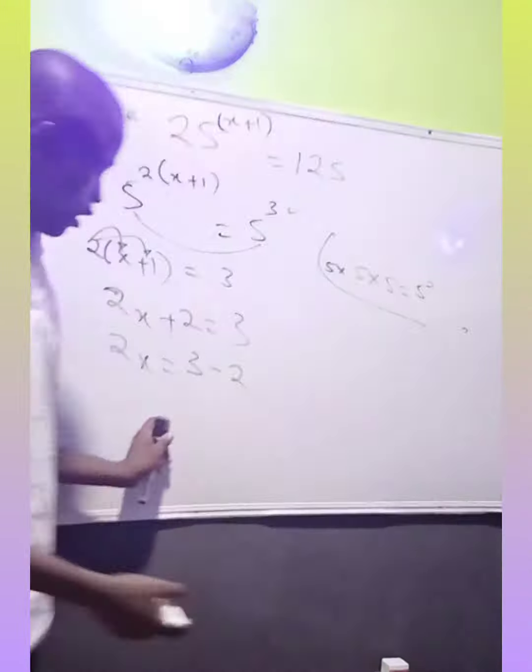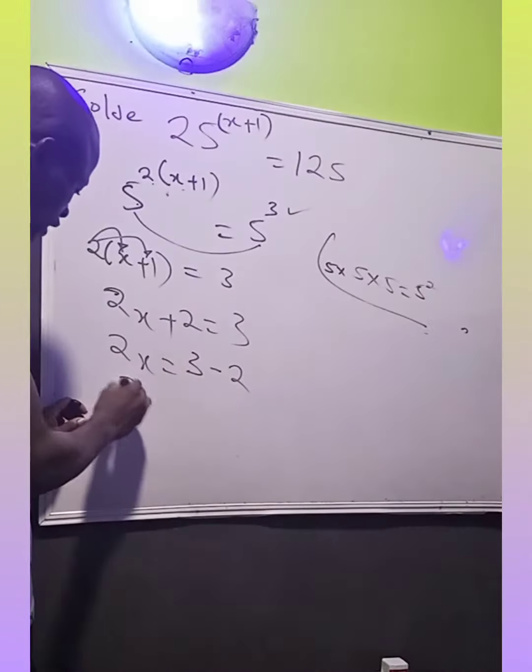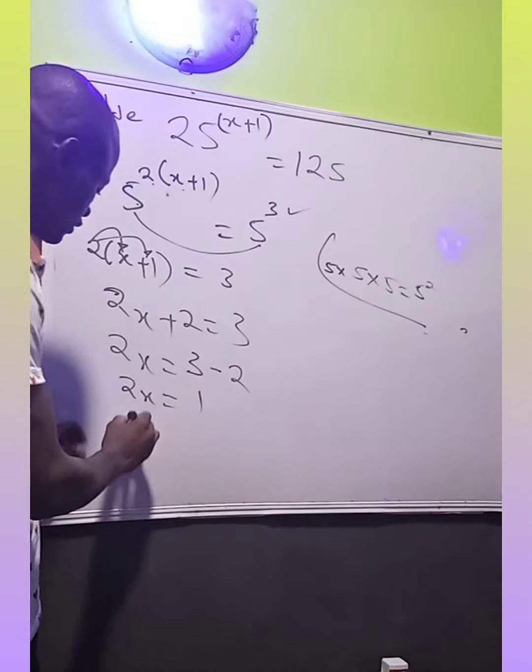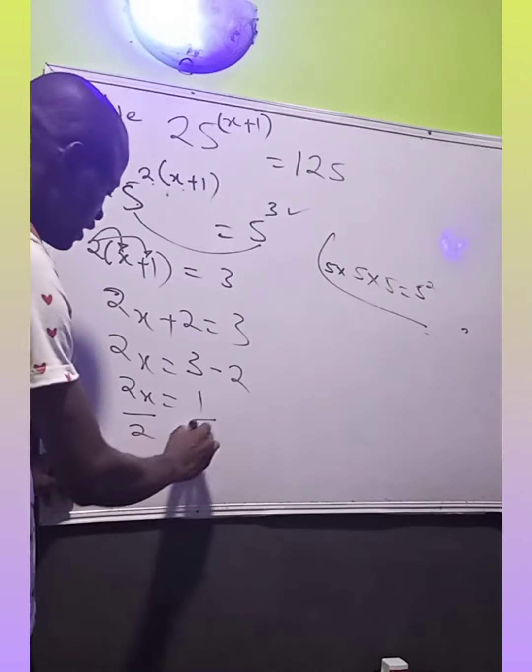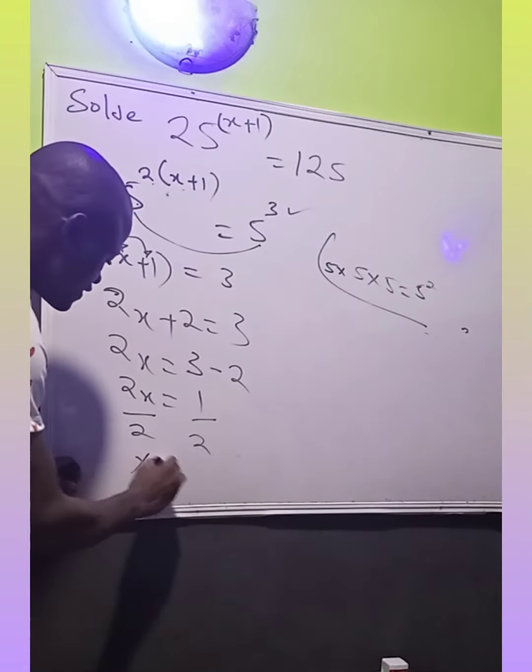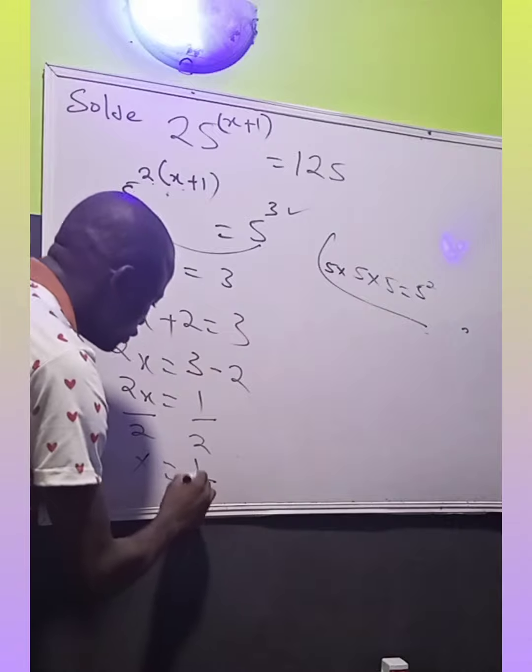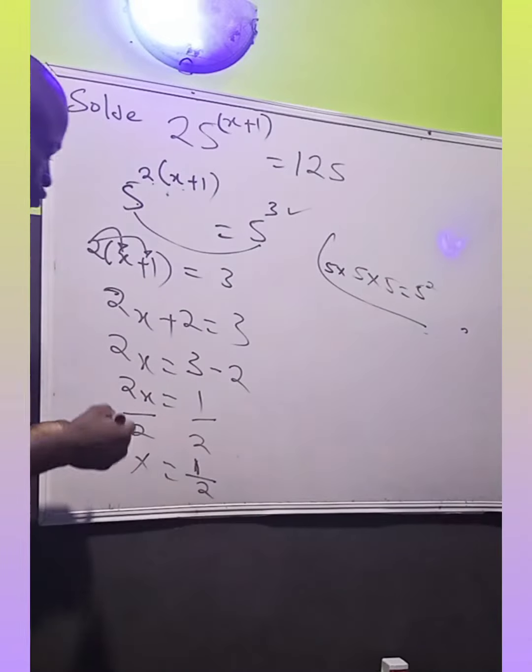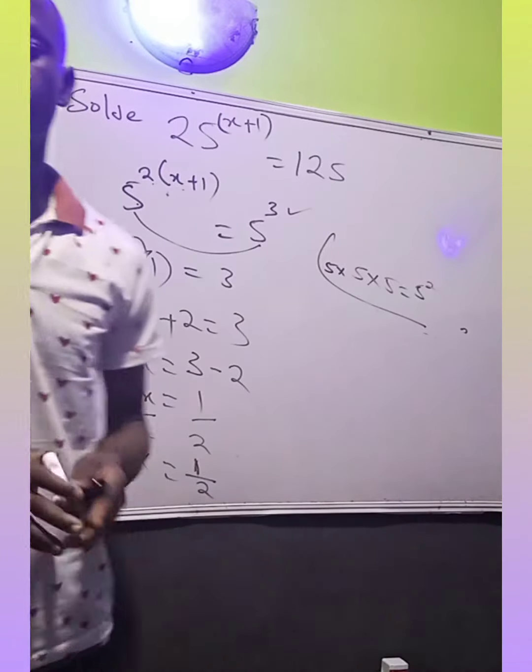Are you there? Okay. So we're going to have 2x equals to 1. So we divide both sides by 2. It means our x is equals to 1 divided by 2. So the answer is 1 divided by 2. So that is how to solve that question in a simple step.